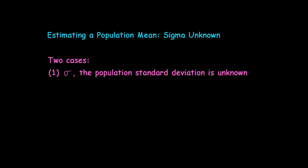In case two, sigma, the population standard deviation, is known. So of the two, the first case is much more common. If we don't know mu, the population mean, we probably don't know sigma, the population standard deviation. So we'll start with the more common case, the first case.